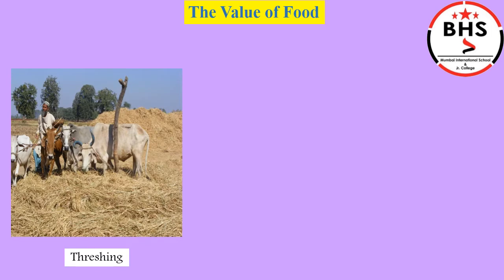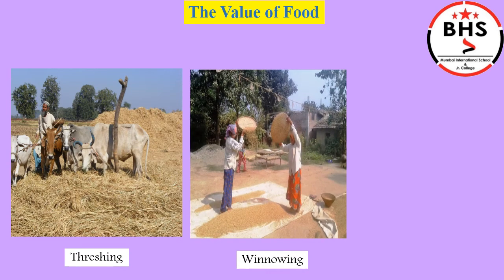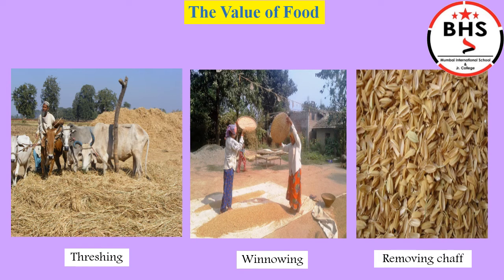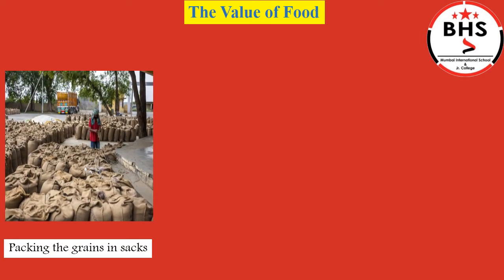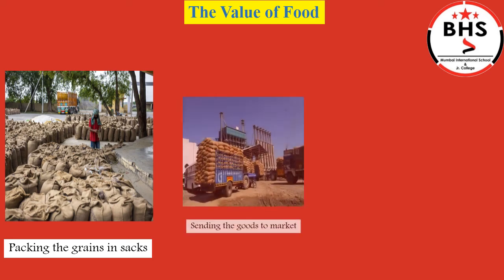The first step after harvest is threshing, and then comes winnowing. Winnowing helps in removing the chaff. The grain obtained after winnowing is filled in sacks and protected well from insects, worms, cockroaches, or other pests such as mice or rats. Some grain is kept aside for the family and the rest is sent to the market.